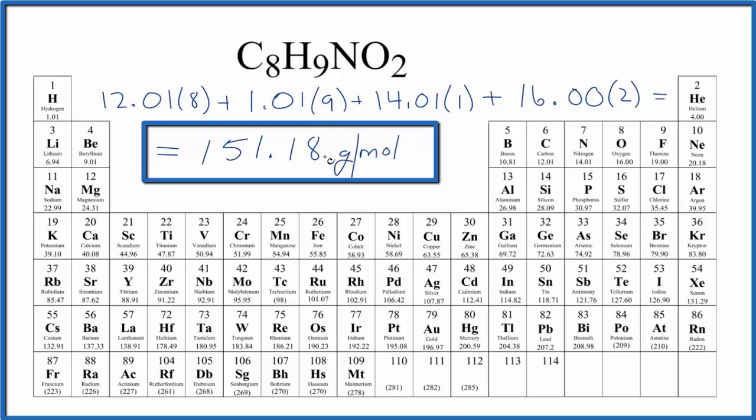What that means is if we have 1 mole of acetaminophen, it would have a mass of 151.18 grams. Note in my periodic table, it rounds to 2 decimal places. If your periodic table is different, you might get a slightly different answer here.